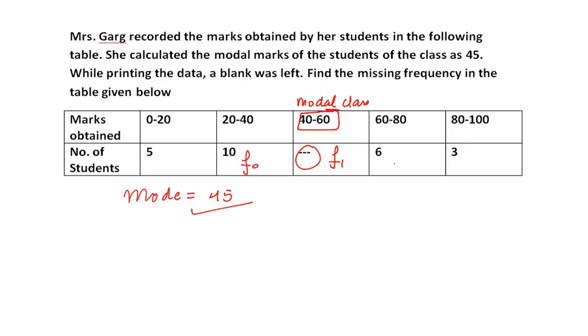And its corresponding frequency is our F1. So yes, it will be the highest one. The preceding one is F0, and the succeeding one, the next one, is F2. F2 is 6. So you have F0 value as 10, F1 is missing, and F2 is 6.